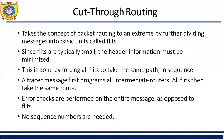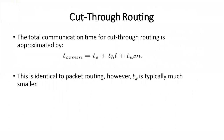No sequence numbers are needed in cut-through routing. The total communication time for cut-through routing is approximately given by TCOM = ts + th*L + tw*M. This is identical in form to packet routing; however, tw is typically much smaller. So these are the three protocols used in message passing in parallel machines: first, store-and-forward; second, packet routing; third, cut-through routing.